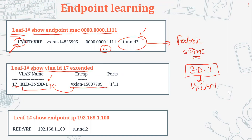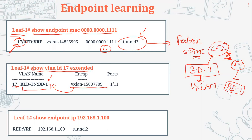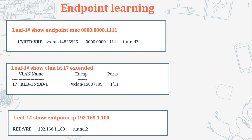If the same bridge domain is created on another leaf, the same VxLAN ID will be assigned to it. The same applies to VRFs — when you create a VRF, a VxLAN ID is automatically assigned. You can check the locally significant PI VLAN information using 'show vlan id [number] extended'. Whenever you see a tunnel interface in the endpoint output, it means it is a remote endpoint.